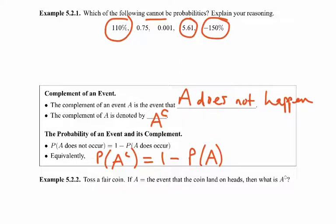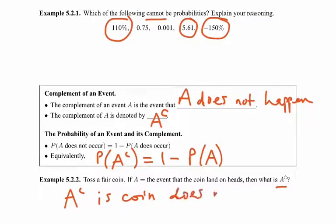Here's a quick example: toss a fair coin. If A is the event that the coin lands on heads, what is the complement? The complement of this event — A complement — is that the coin does not land on heads. That would be that it lands on tails, but I prefer you think of it as the complement is the event not happening, so in this case it's that the coin does not land on heads.